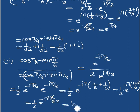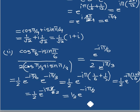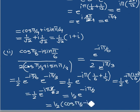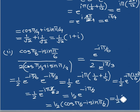This simplifies to 1 by 2 times e to the power minus i(π/2). Applying Euler's formula: e to the power i(π/2) equals cos(π/2) plus i sin(π/2). So we get 1 by 2 times cos(π/2) minus i sin(π/2). Now cos(π/2) equals 0 and sin(π/2) equals 1, giving 0 minus i.